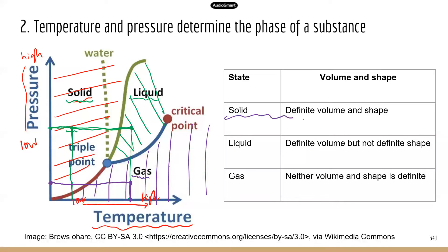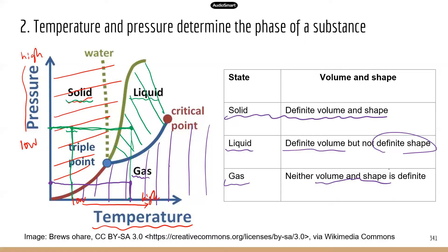Solid has a definite volume and shape — the shape does not change. Liquid does have a definite volume, but no definite shape. If you put water in a circular container it's circular, and in a rectangular container it's rectangular. Gas has neither a definite volume nor a definite shape — gas can be in any shape with no definite volume.